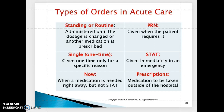Types of orders in acute care: a PRN order is given when the patient requires it. For example, acetaminophen 325 milligrams, two tabs orally every 6 hours PRN for temperature greater than 101. Another PRN order example could be Colace 100 milligrams orally three times a day PRN.